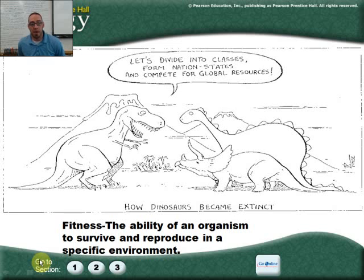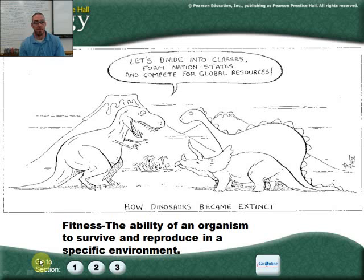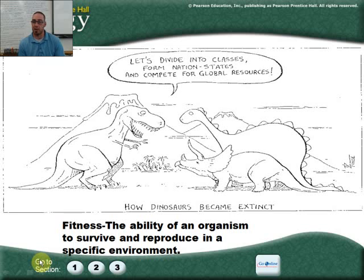Fitness is important. It's the ability of an organism to survive and reproduce in a specific environment. The fitness level of dinosaurs, because of the things that were happening, didn't work out well for them. About 65 million years ago their fitness was low, which caused them to become extinct. Mammals' fitness was high, so they were able to survive and reproduce. For the last 65 million years, mammals have been the dominant order and class on this planet.